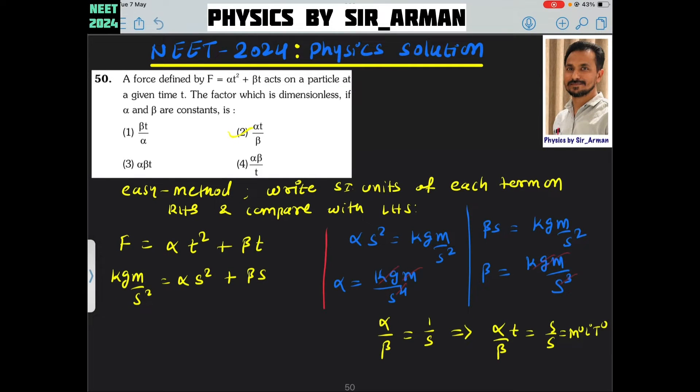Question number 50. A force defined by F equals alpha T square plus beta T acts on a particle at a given time. The factor which is dimensionless if alpha and beta are constants.